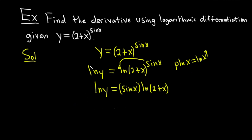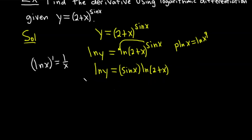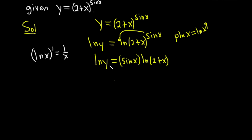Now we differentiate both sides with respect to x. The derivative of ln x is 1 over x, but here we have ln y, where y is a function of x, so we use the chain rule: derivative of the outside is 1 over y, leave the inside untouched, times the derivative of the inside, which is dy/dx. For the right-hand side, we use the product rule, treating sine as the first function and the log as the second.